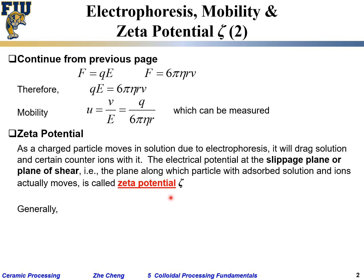Generally, we have this relationship - zeta potential is defined as u eta over epsilon epsilon_0, where u is mobility and eta is viscosity, with dielectric constant and a kappa r factor. For concentrated solutions with Debye length much smaller than particle size, this value becomes one, and our zeta potential equation becomes very simple.